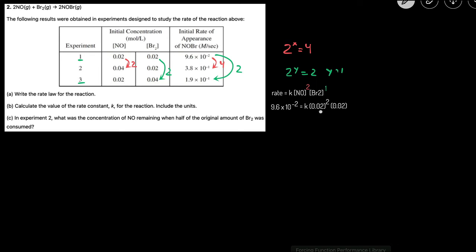After we plug in the numbers, this is where we get, notice that I transferred the orders down. And then we just use algebra to solve for K. So we can just divide both sides by 0.02 squared and divide both sides by 0.02. And then that will give us a K value of 12,000.